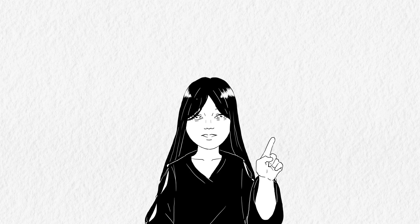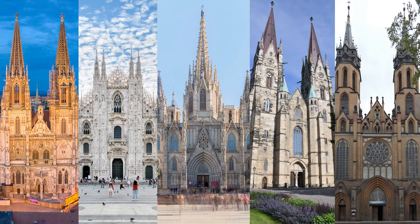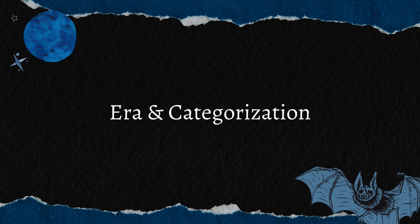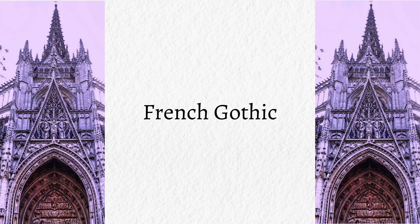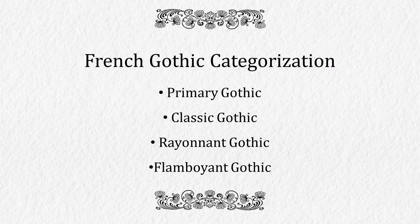Following this, the Gothic architectural style became increasingly popular in many European countries including Germany, Italy, Spain, Sweden, Poland, and many others. The basic categories used by historians are based on their development in France and England. French Gothic can be divided into four periods: Primary Gothic, Classic Gothic, Rayonnant Gothic, and Flamboyant Gothic.